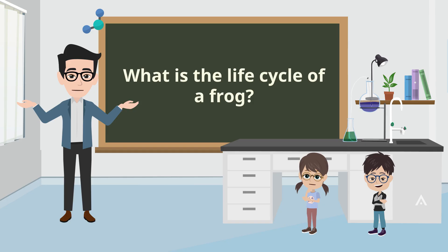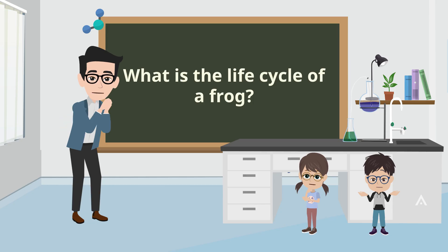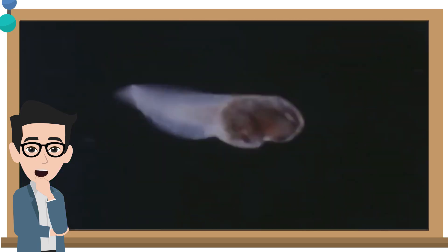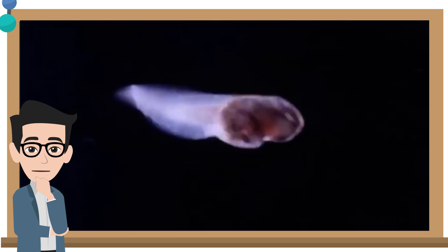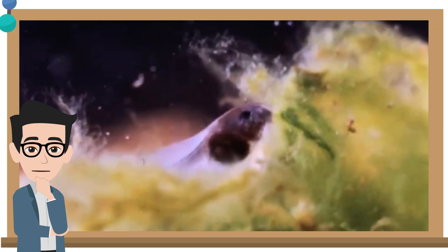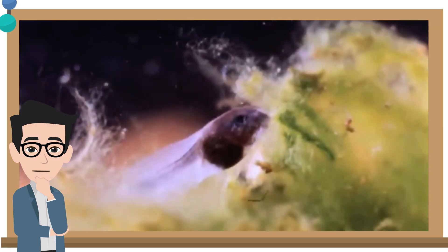Well, let's find out. The life of a frog starts from the eggs. Then the eggs change to become tadpoles. Let's see how a tadpole changes as it grows to become a frog.